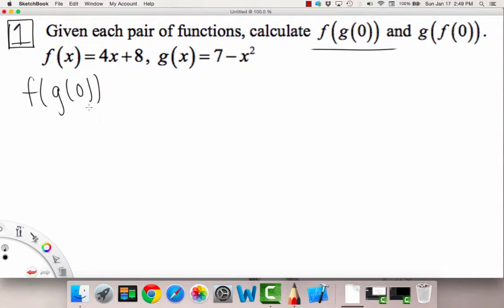So the first thing we have to evaluate is the inner function at the given input or initial input value of 0. So all we have to figure out is what is g of 0. We're just going to use our formula for g, so that would be 7 minus 0 squared, which simply gives us a 7.